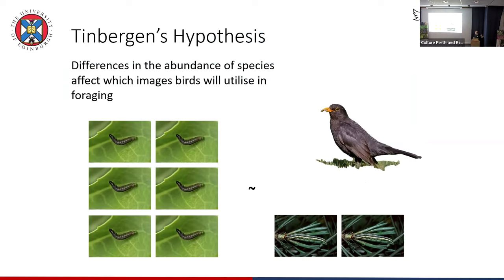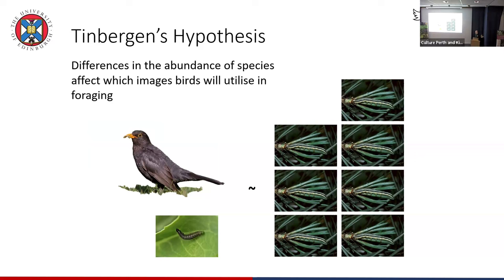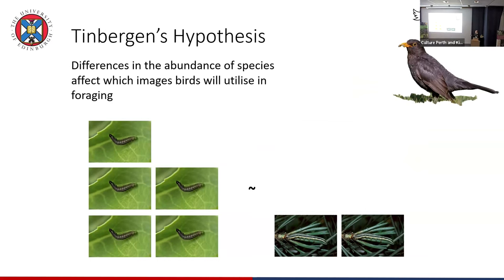Tinbergen's idea was that differences in abundance of different prey species determine which ones are predated. A bird randomly goes through the environment, finds a caterpillar, thinks this is what prey looks like, goes off and finds lots more, predates them heavily. Numbers go down, other prey species numbers go up. It finds this image isn't productive anymore, bumps into another by chance, reinforces that image instead. So common species get predated heavily and rare ones don't.